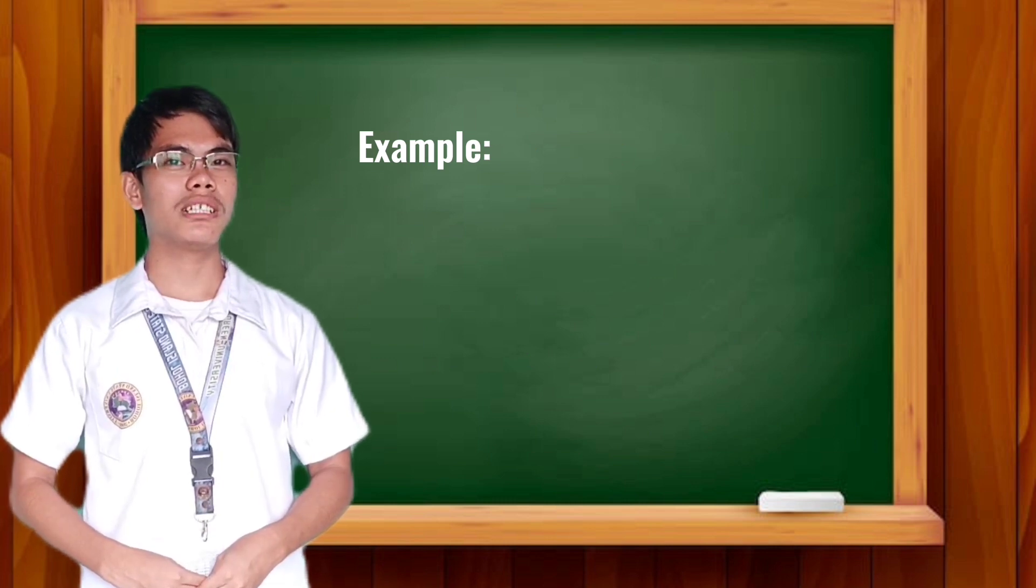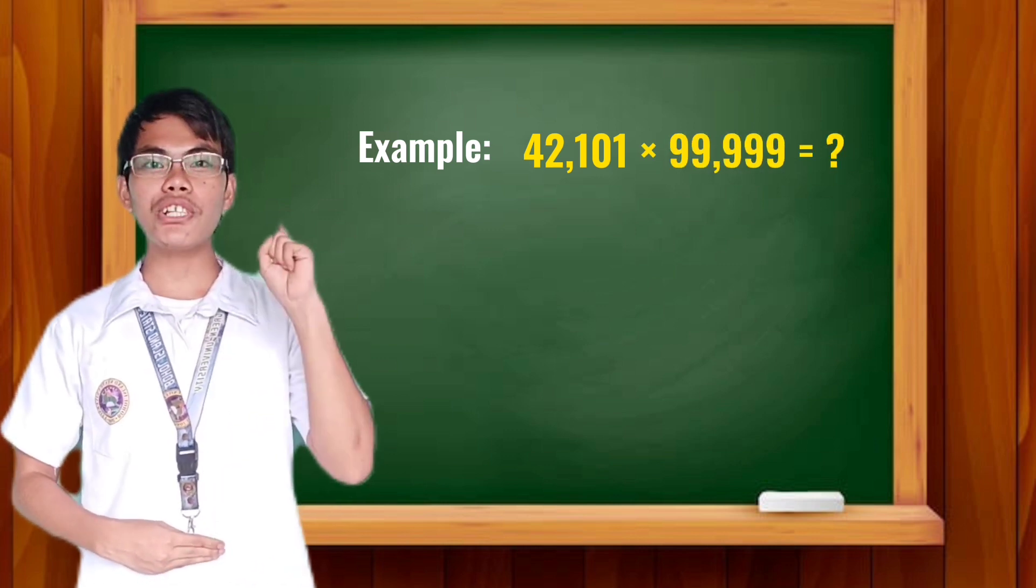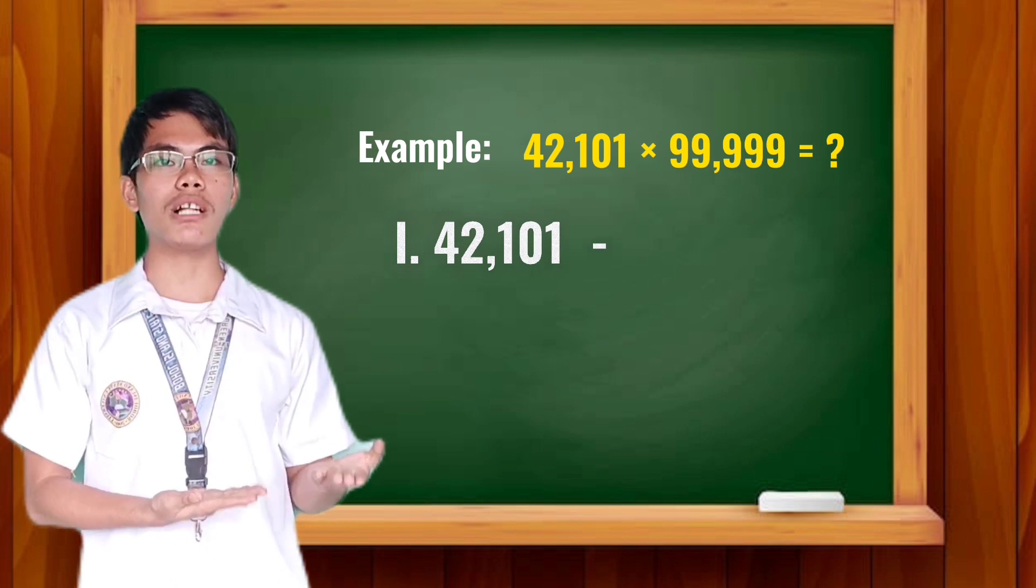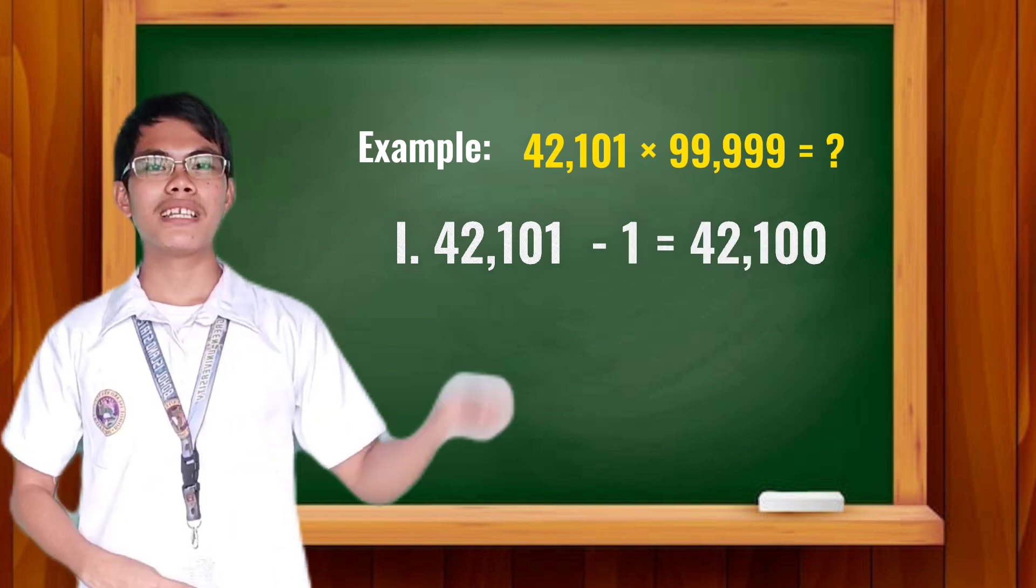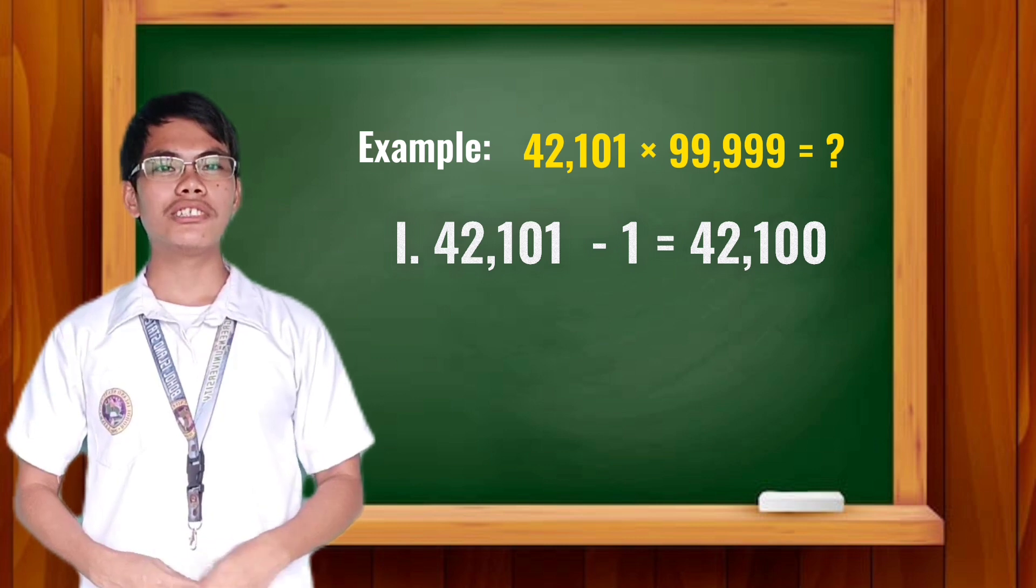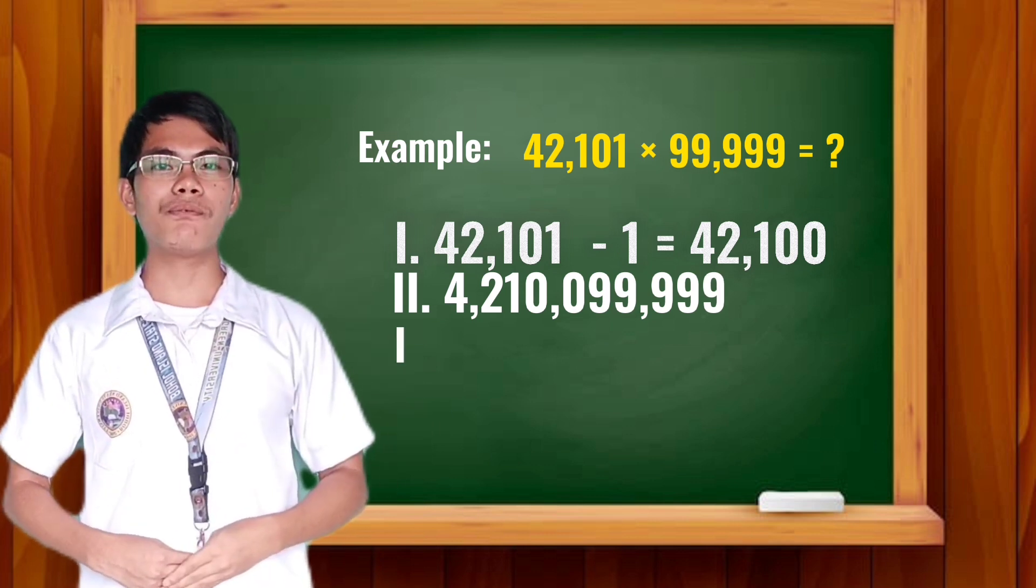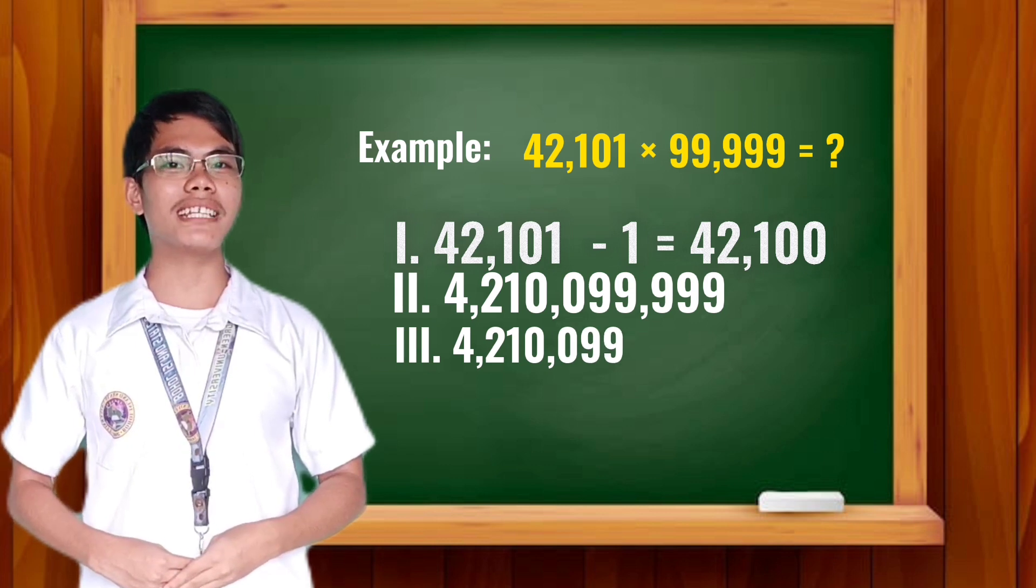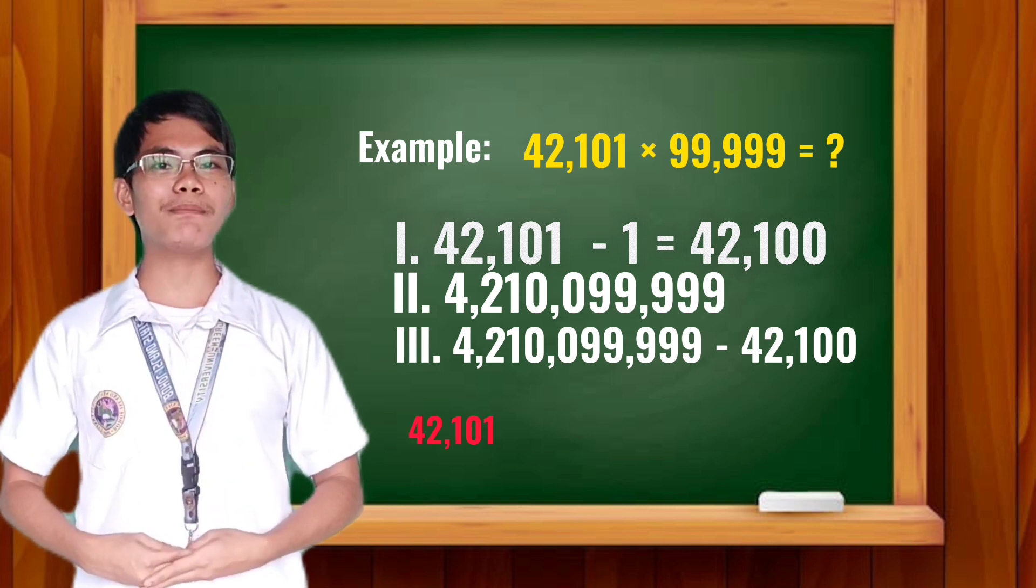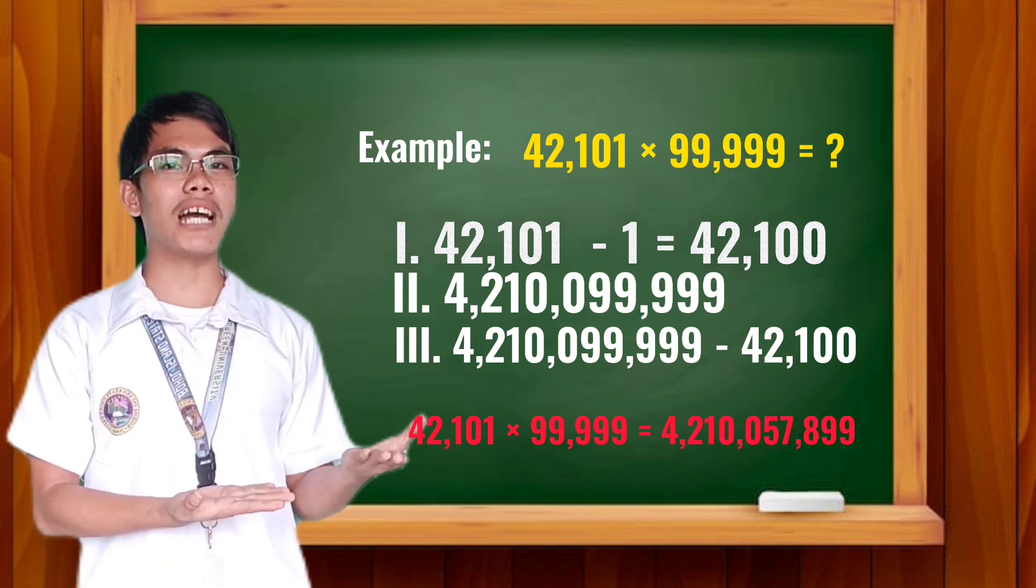Let's have another example. So, we have here 42,101 times 99,999. First step: Subtract 42,101 by 1. So, 42,101 minus 1 is equal to 42,100. Next step: Copy 42,100 together with 99,999. So, it will be 4,210,099,999. Last step: Subtract 4,210,099,999 by 42,100. Therefore, 42,101 multiplied by 99,999 is equal to 4,210,057,899.